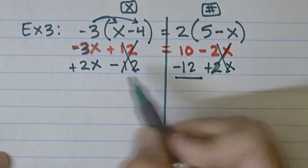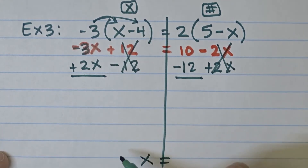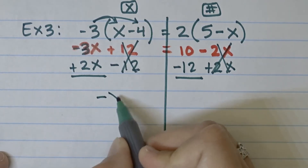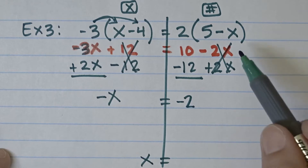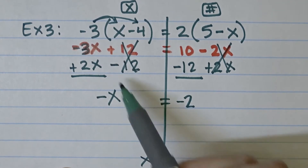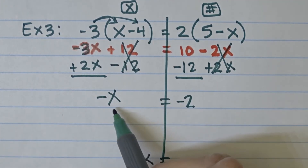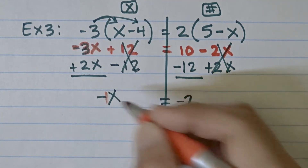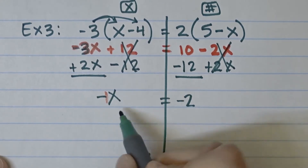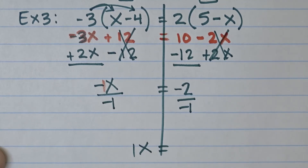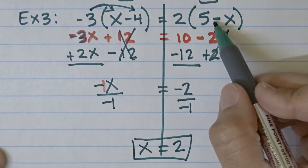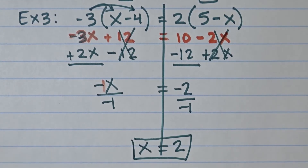After combining, all x's are on the left: negative 3 plus 2 is negative 1x, or negative x. The number terms on the right add up to negative 2. This is multiplication by an invisible negative 1, so divide both sides by negative 1. Negative 1 divided by negative 1 is positive 1x, and negative 2 divided by negative 1 is positive 2. So x equals 2. You can verify by plugging 2 back into the original equation.